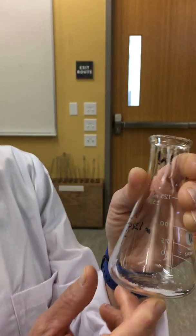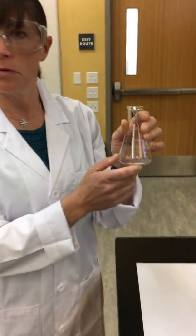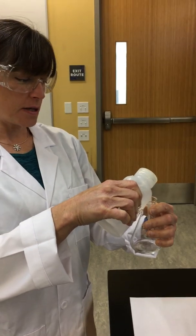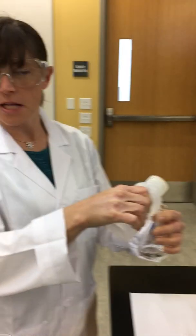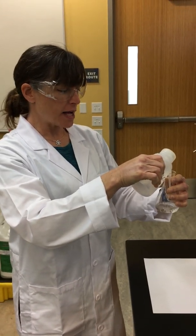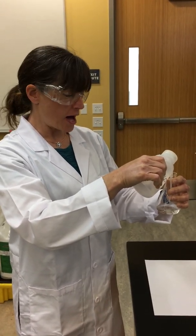So the first thing we're going to do is add some deionized water to bring it to a solution. We want to add approximately 10 to 20 milliliters. But because we have the accurate weight of the oxalic acid,